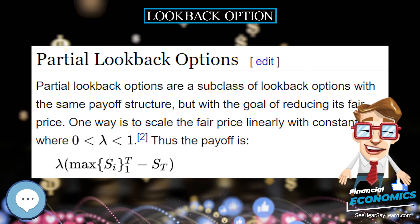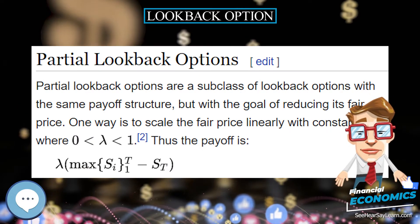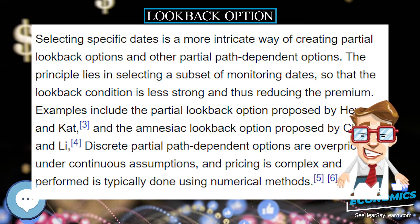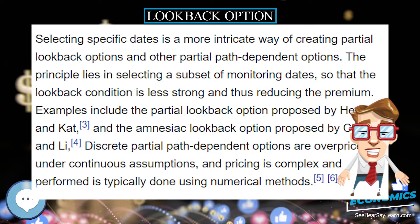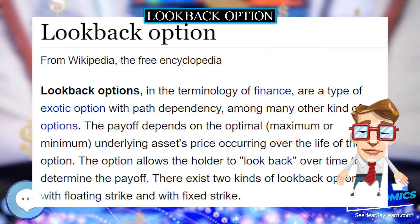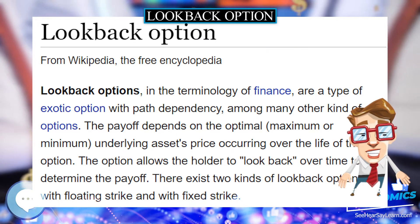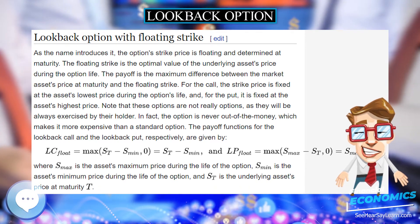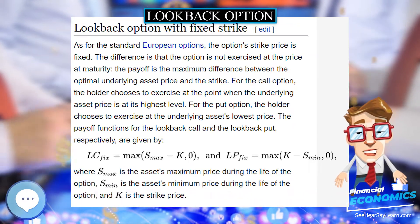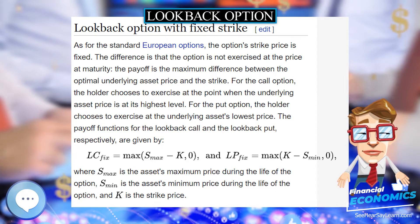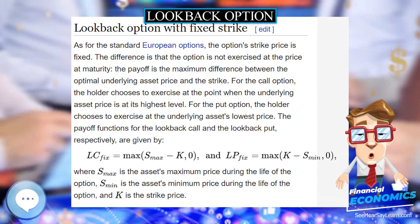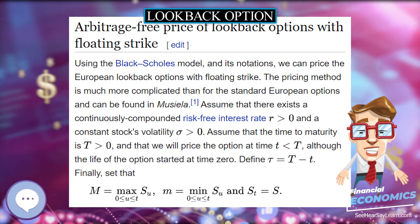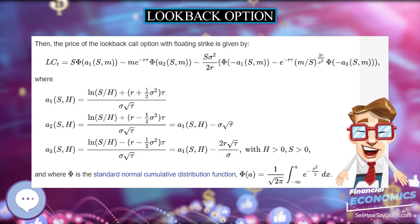As the name introduces it, the floating strike lookback option's strike price is floating and determined at maturity. The floating strike is the optimal value of the underlying asset's price during the option life. The payoff is the maximum difference between the market asset's price at maturity and the floating strike. For the call, the strike price is fixed at the asset's lowest price during the option's life, and for the put, it is fixed at the asset's highest price.